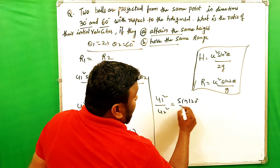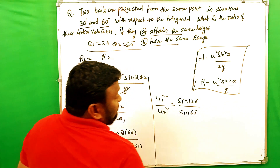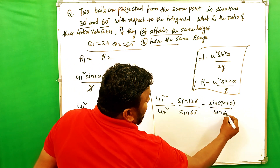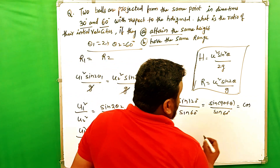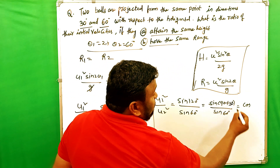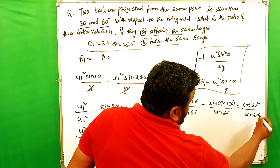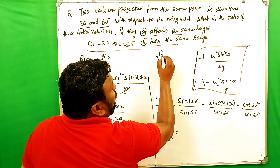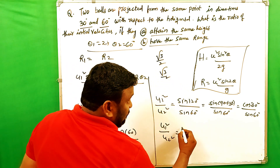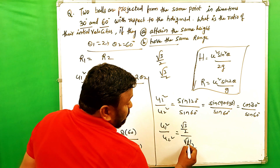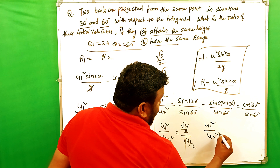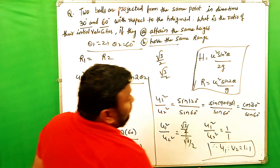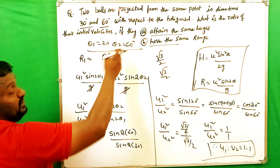Now sin120° = sin(90° + 30°) = cos30° = √3/2, and sin60° = √3/2. So u1² / u2² = (√3/2) / (√3/2) = 1. Therefore u1 / u2 = 1 / 1, meaning the ratio of initial velocities when the two balls have the same range is 1 : 1.